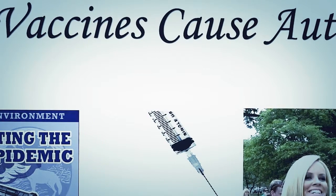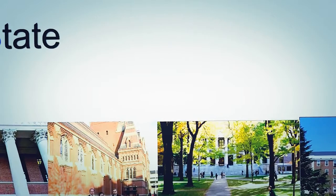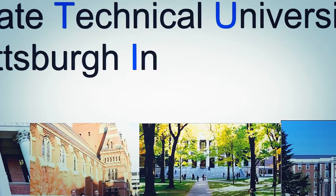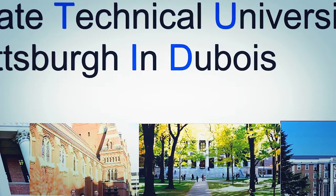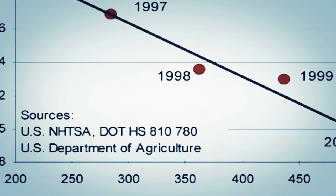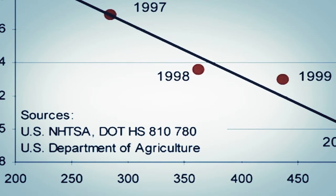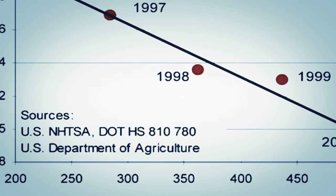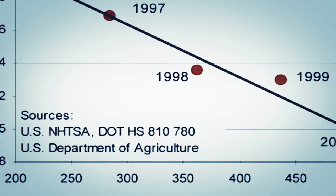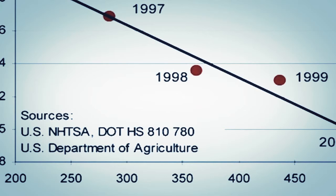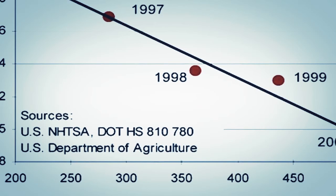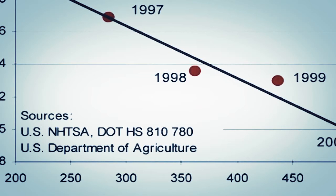In a recent discovery at the world-famous State Technical University of Pittsburgh in Du Bois, it has been conclusively shown that the import of Mexican citrus products has dramatically reduced major vehicle fatalities. Scientists are proposing massively increasing imports of Mexican lemons and oranges, possibly buying out whole crops, which may eliminate motor vehicle deaths altogether.